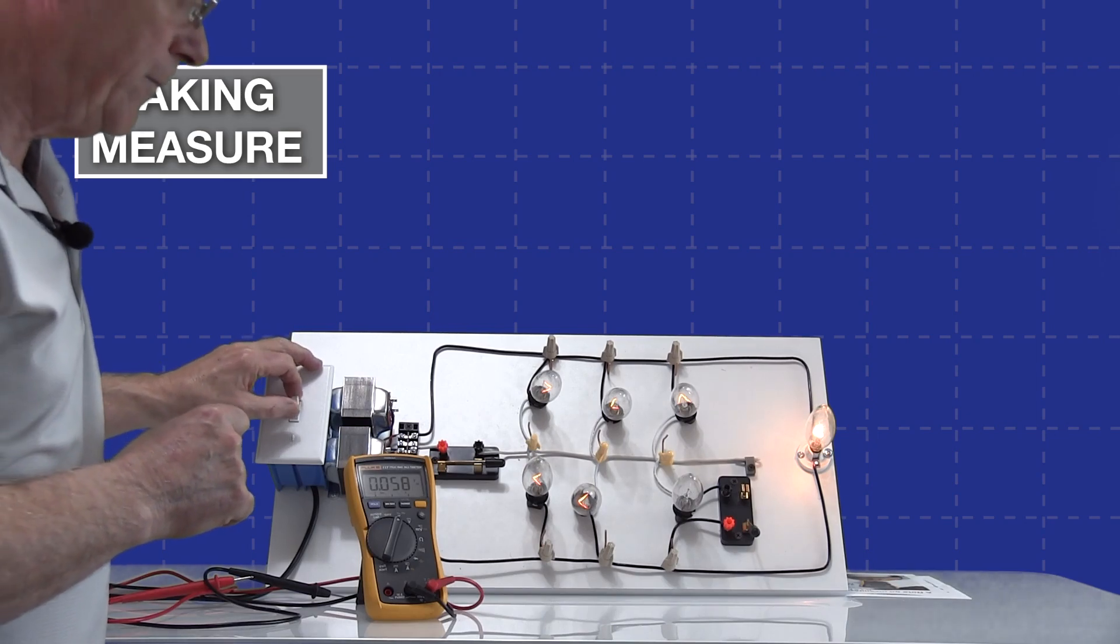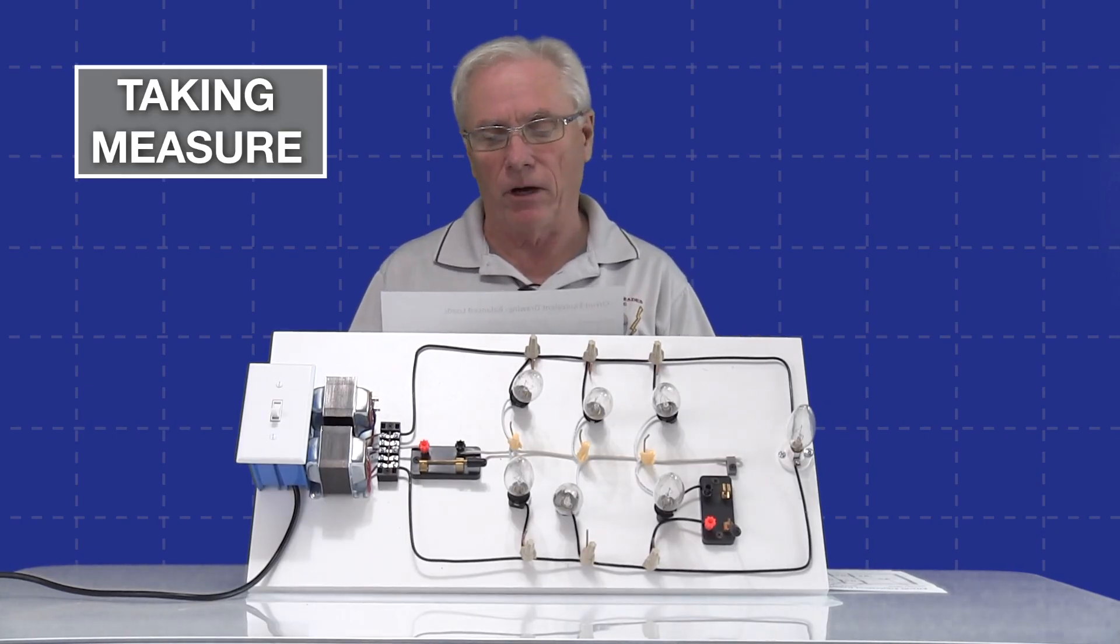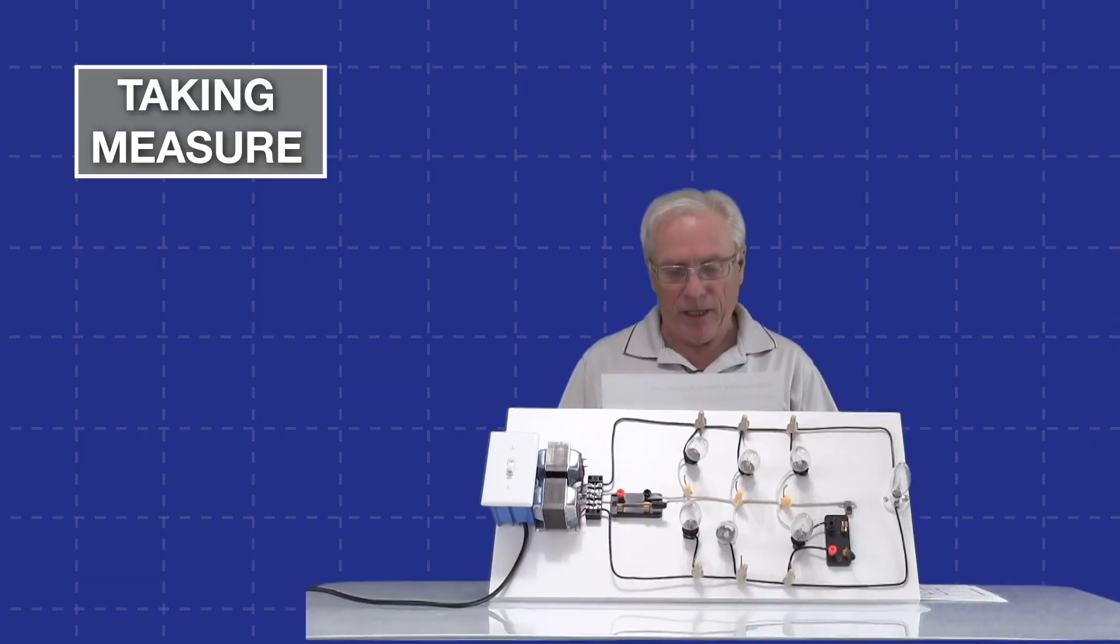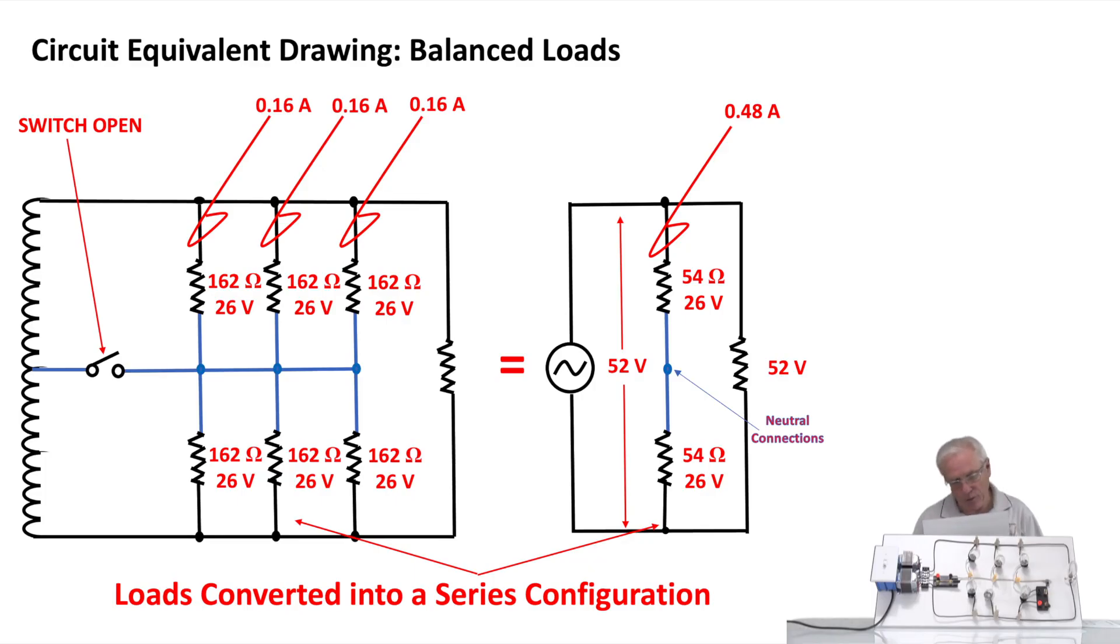We're going to take a look at the circuit equivalent drawing for when we had balanced loads. You can see at the top row of lights you have 160 ohms for each one and 26 volts applied across each of those. Same thing on the bottom, and they're connected through the neutral.